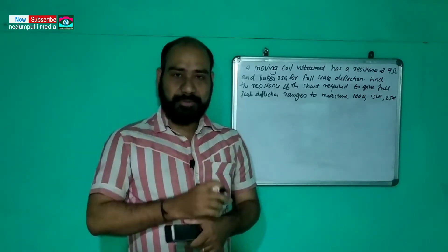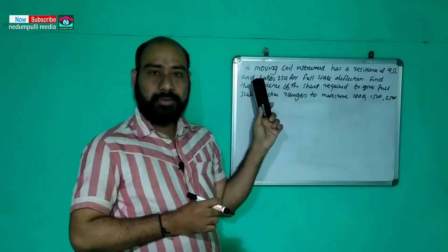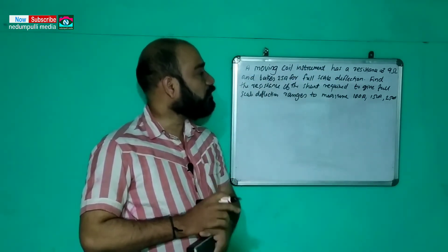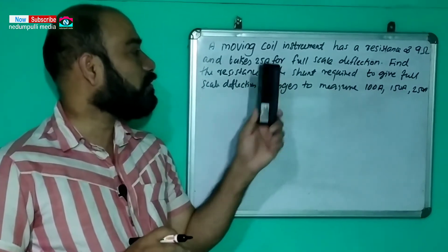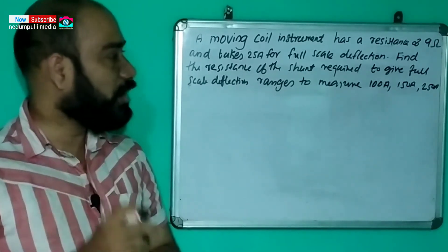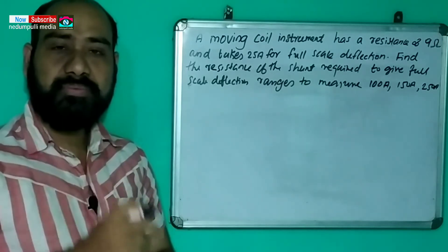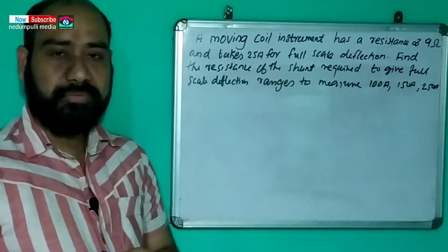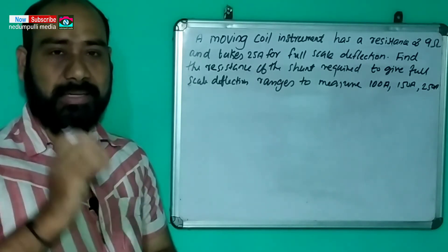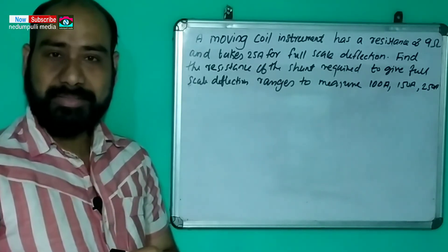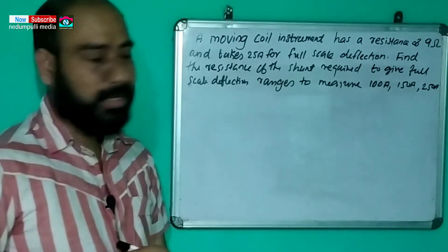The second problem: an instrument takes 25 ampere for full scale deflection. Find the resistance of the shunt required to give full scale deflection for ranges to measure 100 ampere, 150 ampere, and 250 ampere.